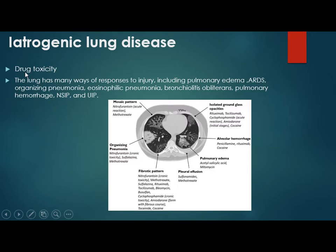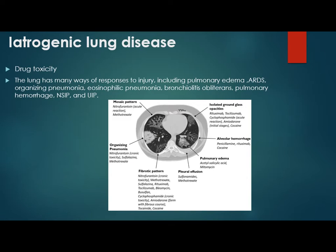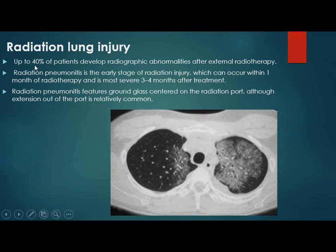Iatrogenic lung diseases are caused by drug toxicity or radiation. The lung has many ways to respond to injury, caused by normal dose or overdose of a drug. The pattern of response may include pulmonary edema, mosaic pattern, organizing pneumonia, fibrotic change, effusion, alveolar hemorrhage, or isolated ground glass opacities. There are many types of drugs that cause diffuse lung disease, and drug toxicity should be put in the differential of many diffuse lung diseases. Regarding radiation lung injury, about 40% of patients develop radiographic abnormality after external radiotherapy.